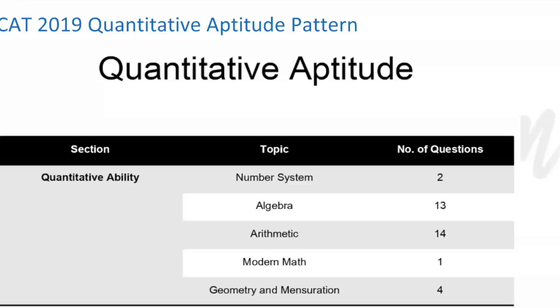Now as you can see, this is the quantum paper of 2019 CAT exam and you can see that from arithmetic there were 14 questions and from algebra there were 13. So cumulative, 27 out of the 34 questions came from these two domains: algebra and arithmetic. Apart from that, you can also see that geometry and mensuration had four questions. This can be a very good image for you to understand what are the important domains as far as quants is concerned.